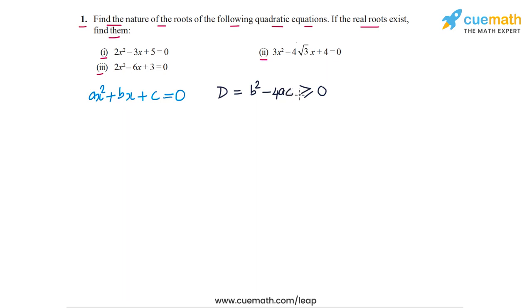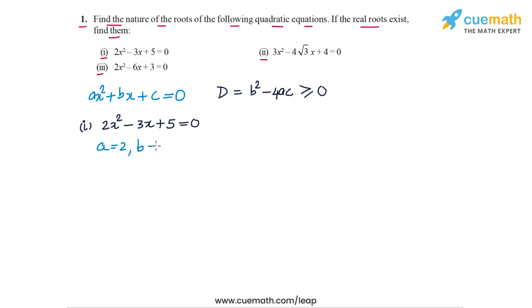Otherwise this equation will have non-real or complex roots. Let's start with part one. In part one, the equation is 2x² - 3x + 5 = 0. Let's write the coefficients of this equation: a is equal to 2, b is equal to -3, and c is equal to 5.